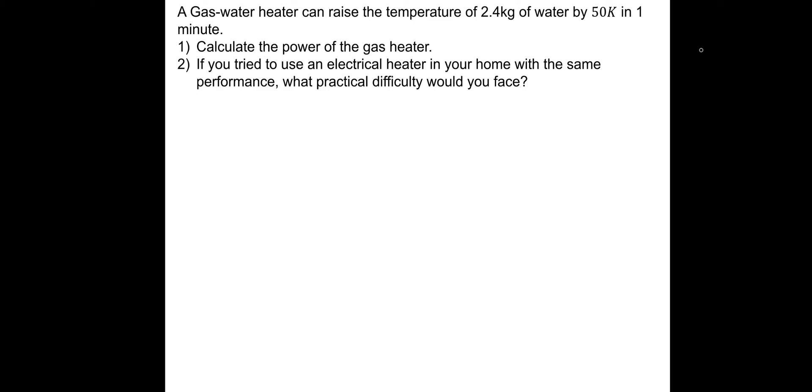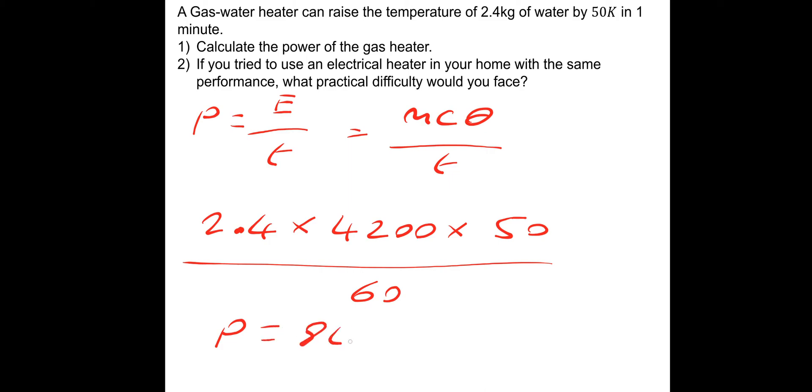Let's move on. Let's look at this one. If you want to pause and have a go. A gas water heater can raise the temperature of 2.4 kilograms of water by 50 Kelvin in only one minute. Calculate the power of the gas heater. Power is work done over time, or energy over time. We know that energy is, well, the thermal energy is mcθ. We've got mcθ divided by time. The mass is 2.4 kilograms, multiplied by the specific heat capacity of water, which we've looked at a couple of times already, 4,200, multiplied by the change in temperature, which is 50 Kelvin. Then we need to divide by the time taken. The time taken is one minute, which is 60 seconds. That's a power equal to 8,400 watts. It's quite a lot, especially for a household device. Which leads us into number two.